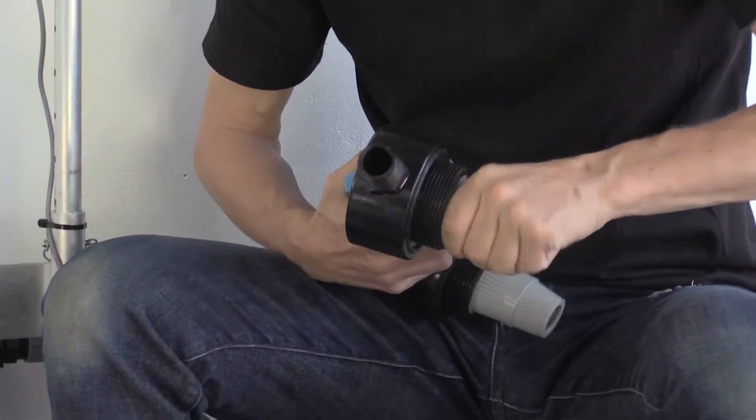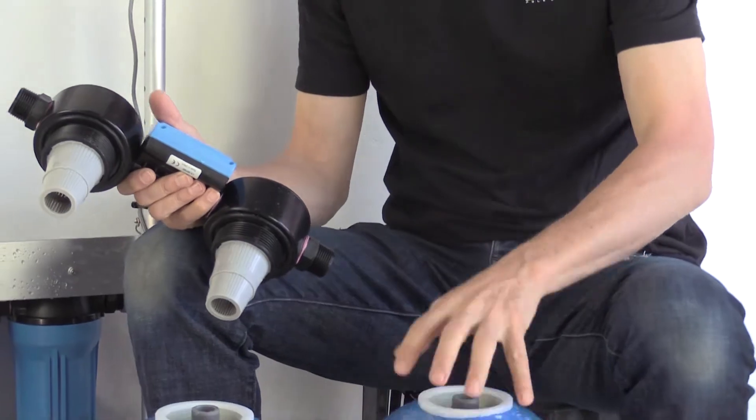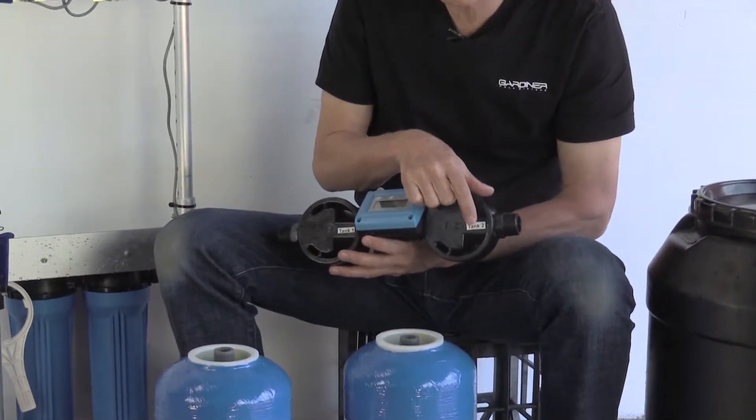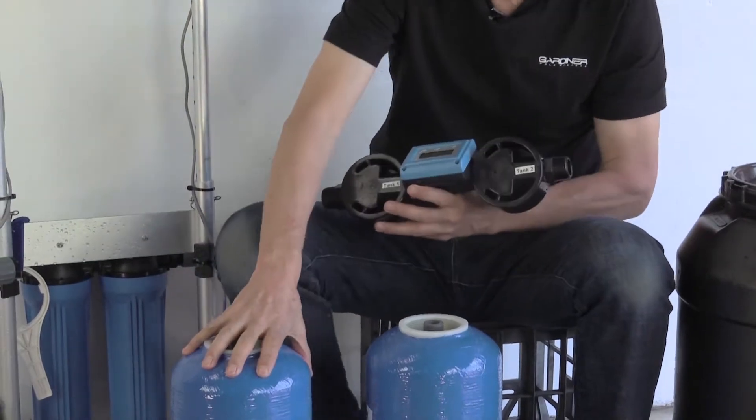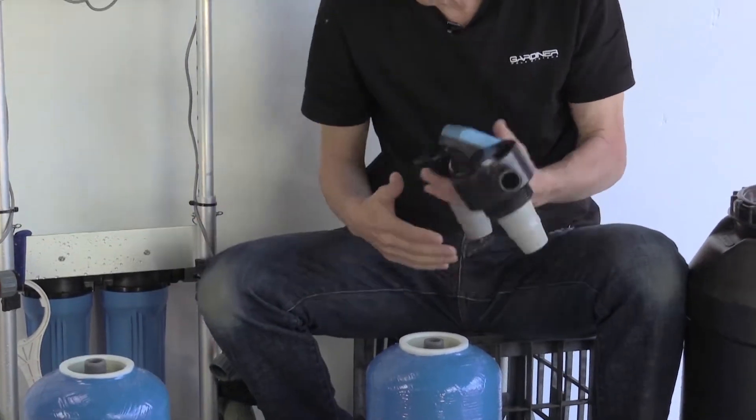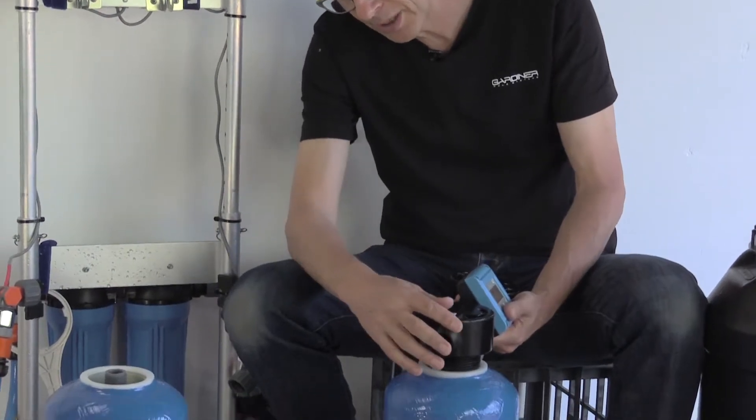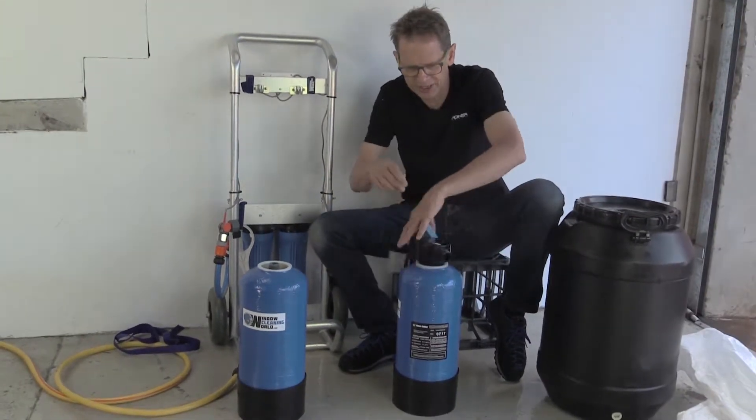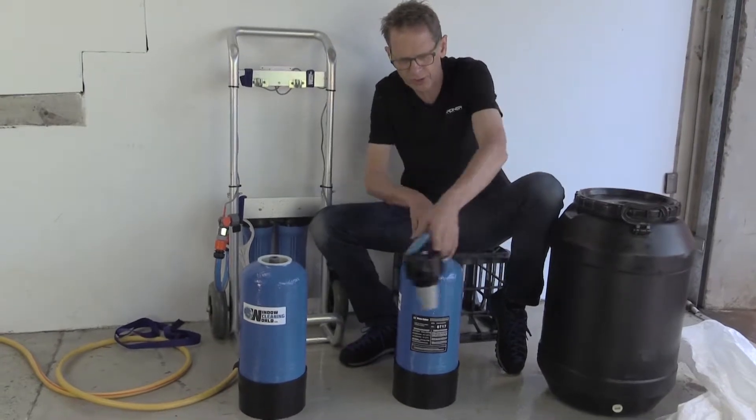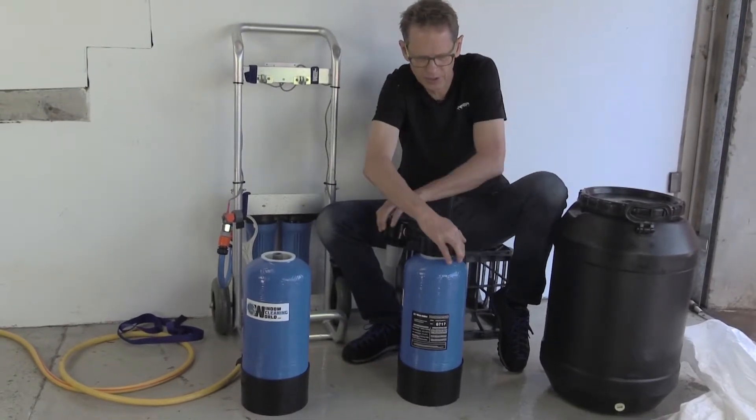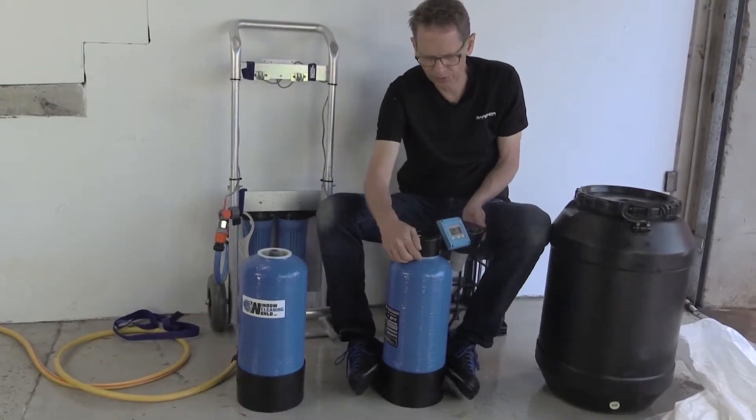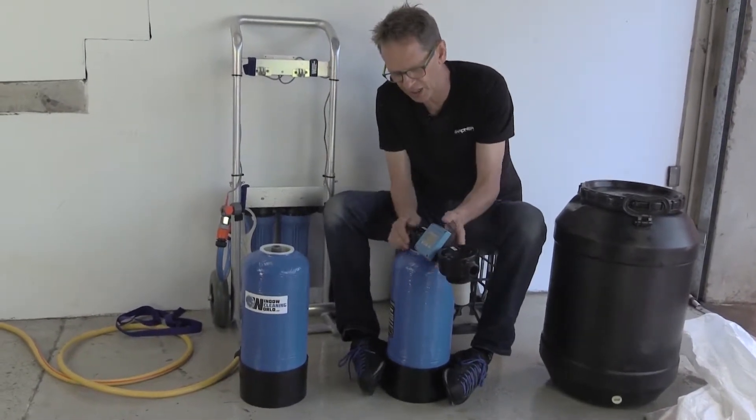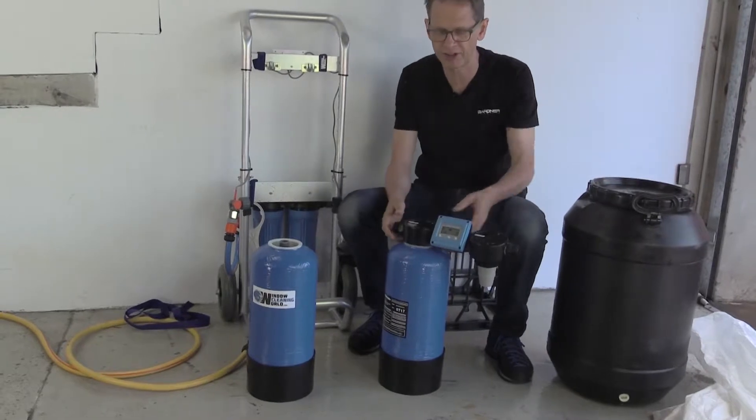So we have our fresh resin tank here. That is going to go in the number two position. Pretty simple. We're going to slip that little basket over there. The first tank is definitely the easiest one. You just screw the head on. When I get to the point, I just hold it with my feet or get your friend to hold it. But you really don't have to do this up very tightly.